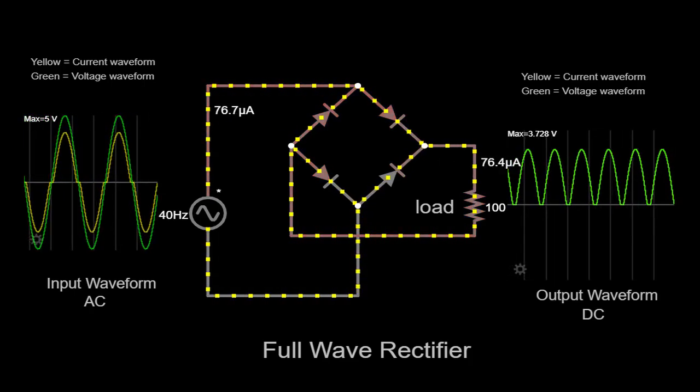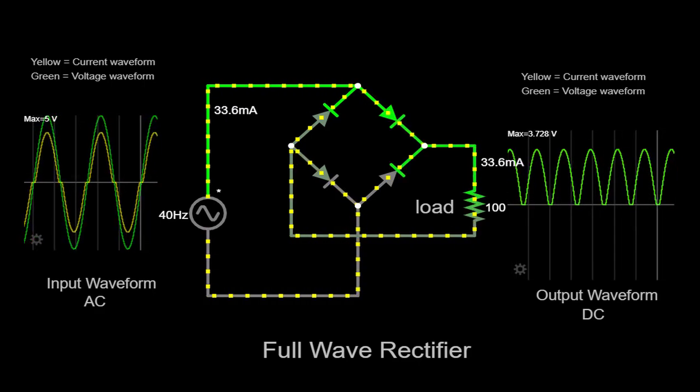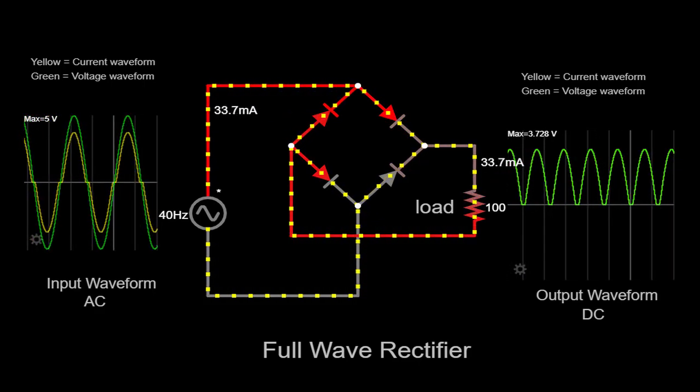These capacitors act as energy storage elements and help reduce the ripple, resulting in a more stable and steady DC output.